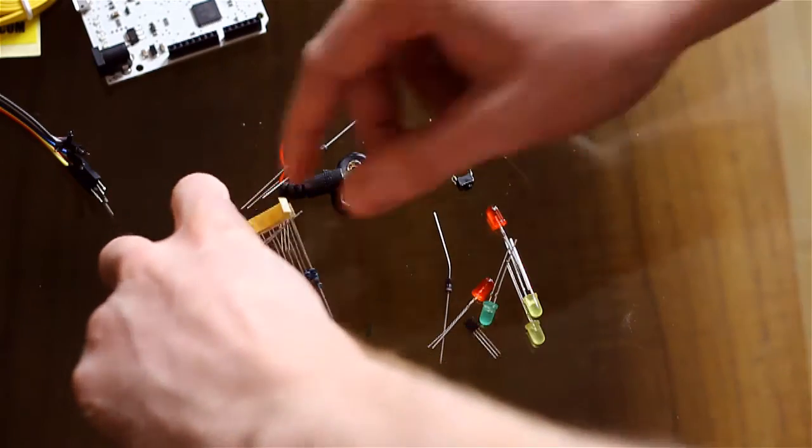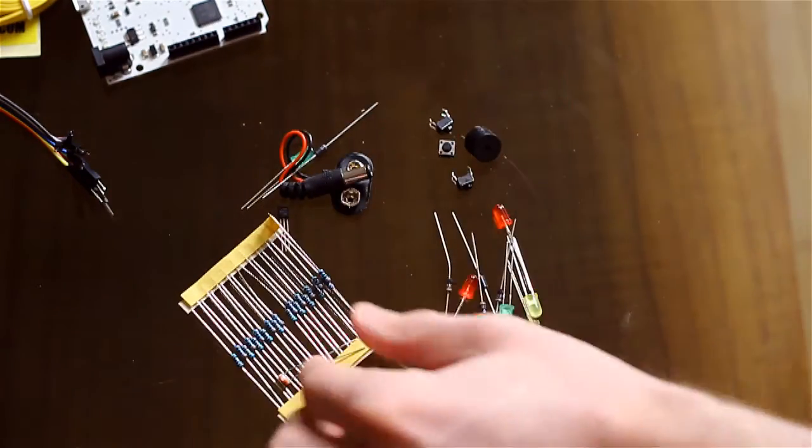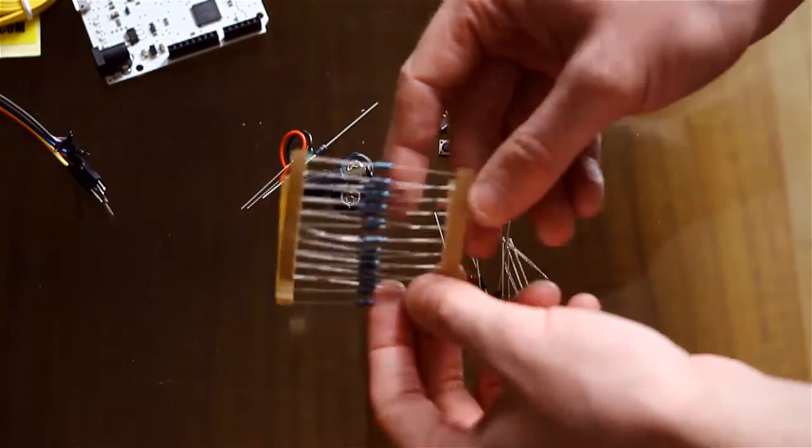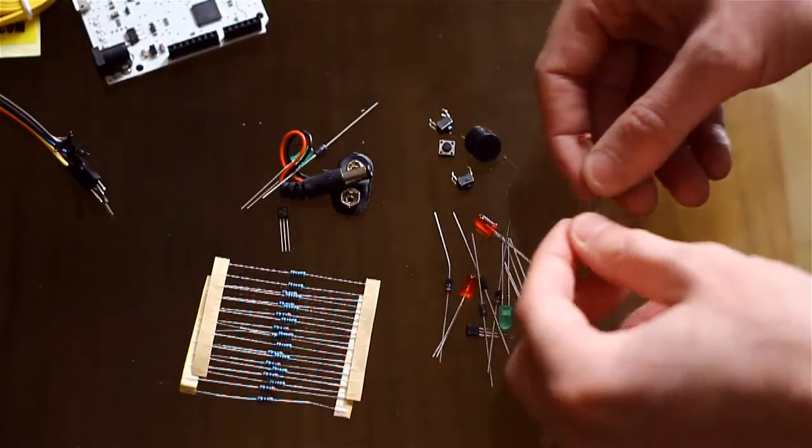A bunch of resistors. I assume they match the LEDs for five volts. We've got a light, what are these called? They react to light.